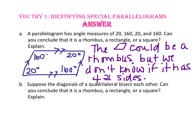Part B says, suppose the diagonals of a quadrilateral bisect each other. Can you conclude that it is a rhombus, a rectangle, or a square? No, because the diagonals of all parallelograms bisect each other. So we can tell that the quadrilateral is a parallelogram, but we cannot tell if it is a rhombus, a rectangle, or a square.